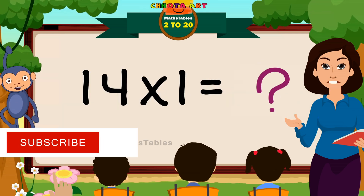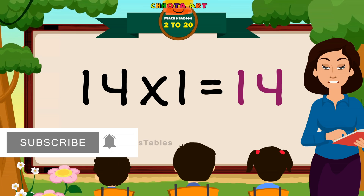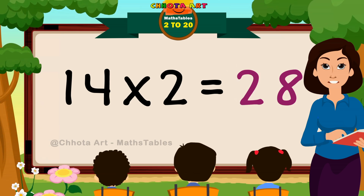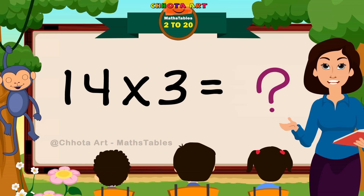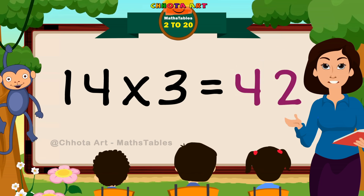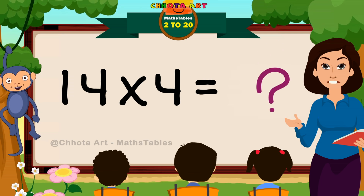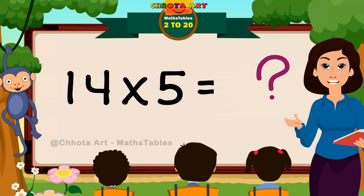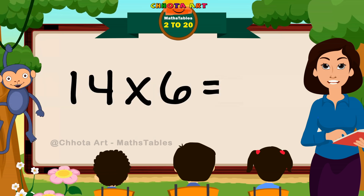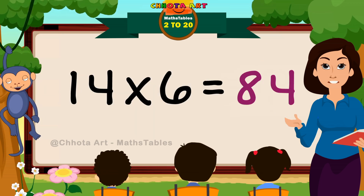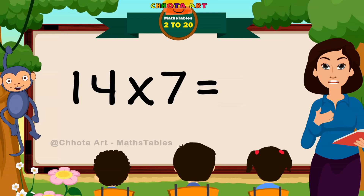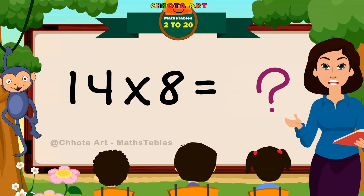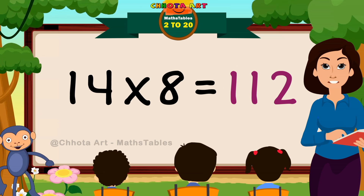14 ones are 14. 14 twos are 28. 14 threes are 42. 14 fours are 56. 14 fives are 70. 14 sixes are 84. 14 sevens are 98. 14 eights are 112.